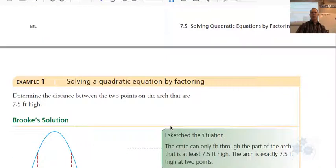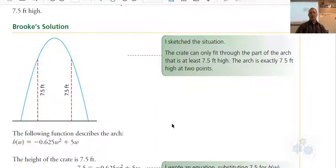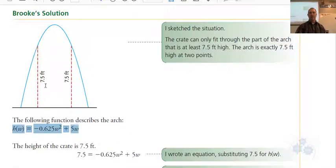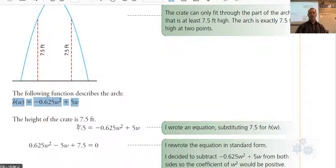Now what we want to do is we want to factor this equation right here to determine what the roots are. Now the roots would be these points here - that's the base width. When we solve for, if we put 7.5 in as a height here instead of zero, the zero would give us the x-intercepts. If we put 7.5 in, that's going to give us these values here that correspond with 7.5, not the ones that correspond to zero.